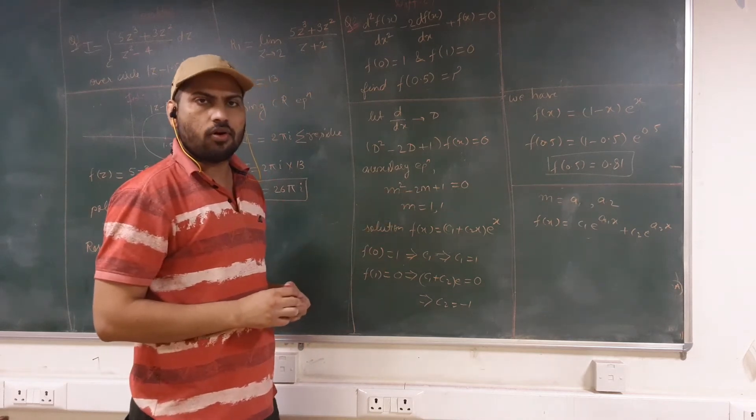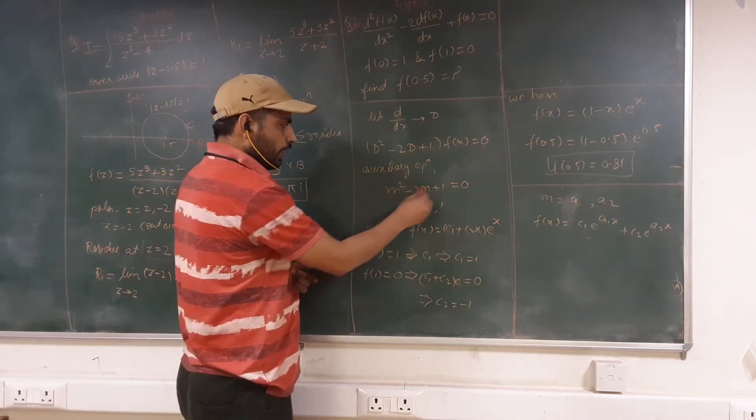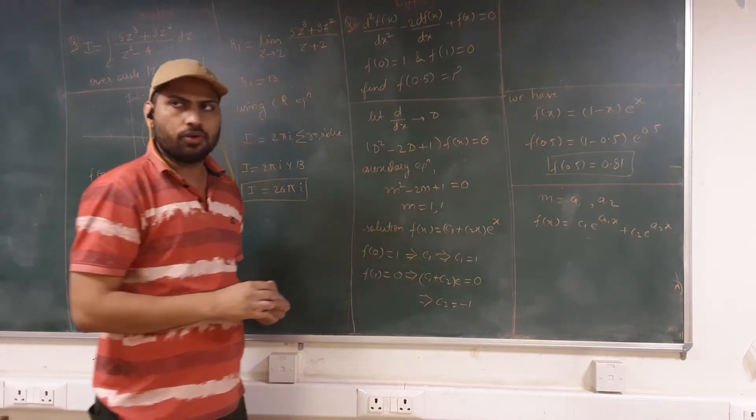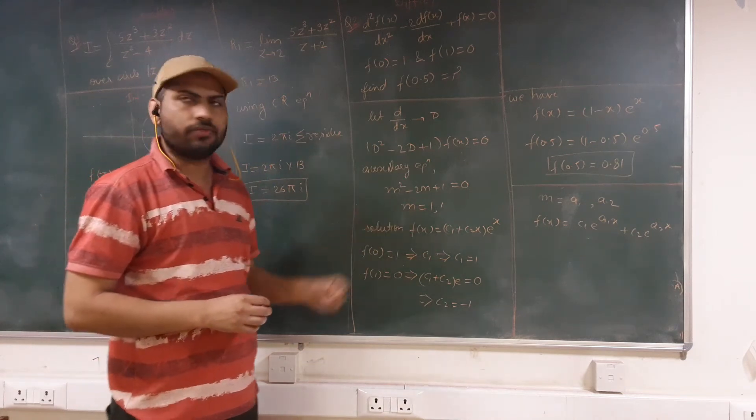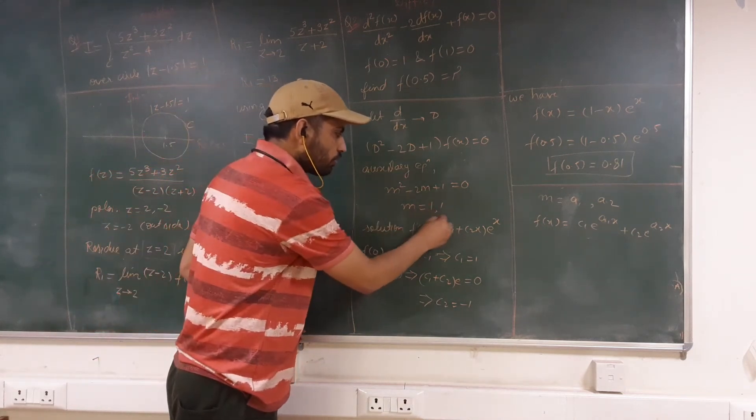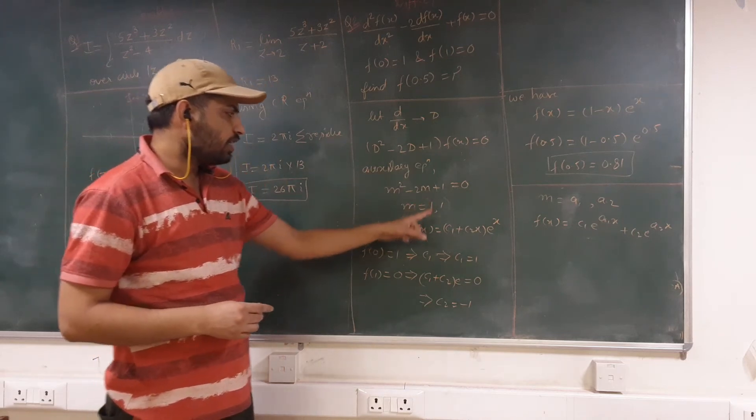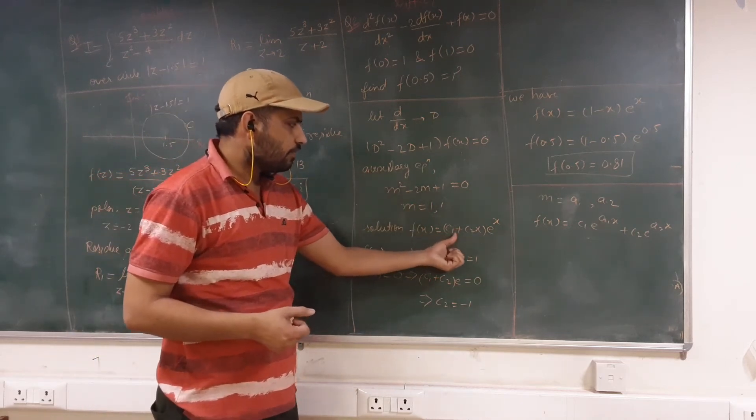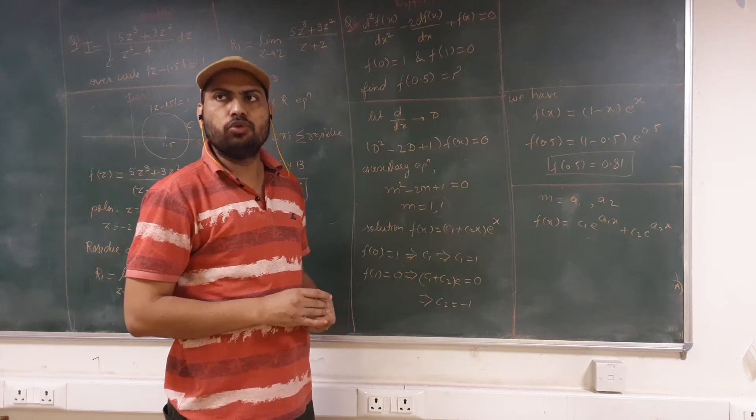And if we find the roots of this auxiliary equation, as this is (m - 1)² equation, the roots will be only 1 and 1. So there are two equal roots. For equal root condition, we have the general solution of f(x) as (c₁ + c₂x)e^x.